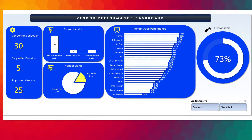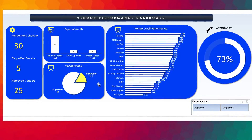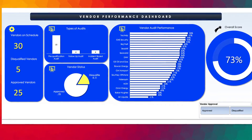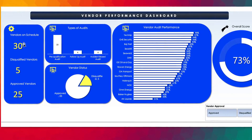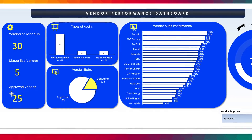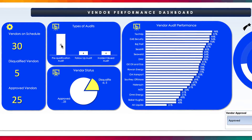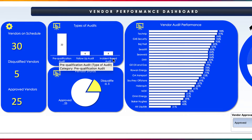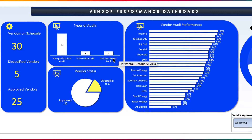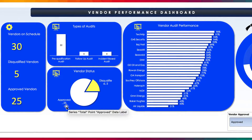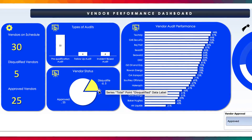Now, this is the main excitement of this vendor audit schedule. We have a dashboard that is beautifully designed to give you an insight into the audit schedule. We have vendors that are on schedule, vendors that have been disqualified, vendors that have been approved, and the types of activities we've carried out — monitoring activities such as pre-qualification, follow-up, and incident-based audits. Then the vendor status: how many vendors have been approved and how many have been disqualified.